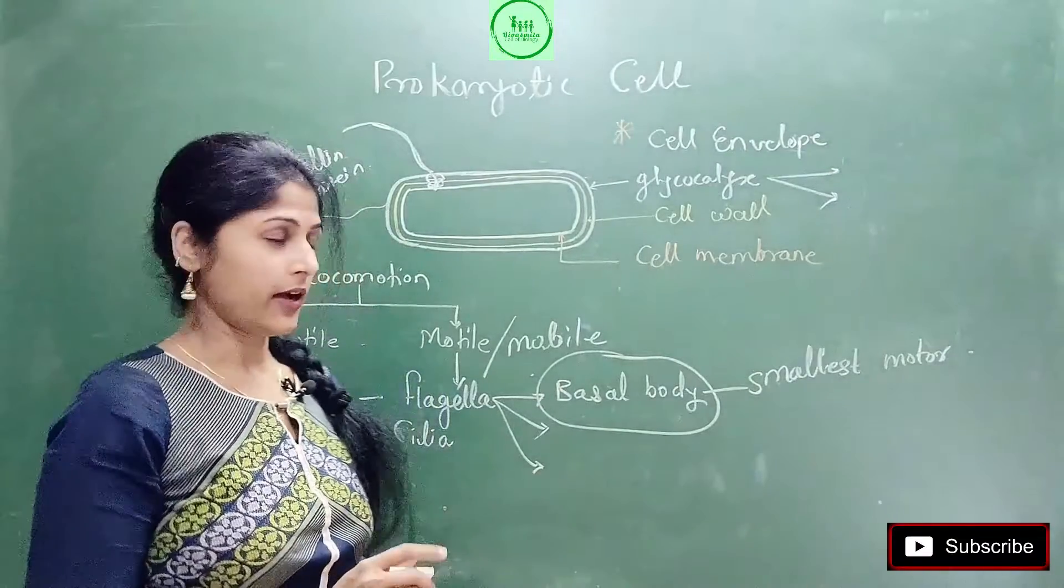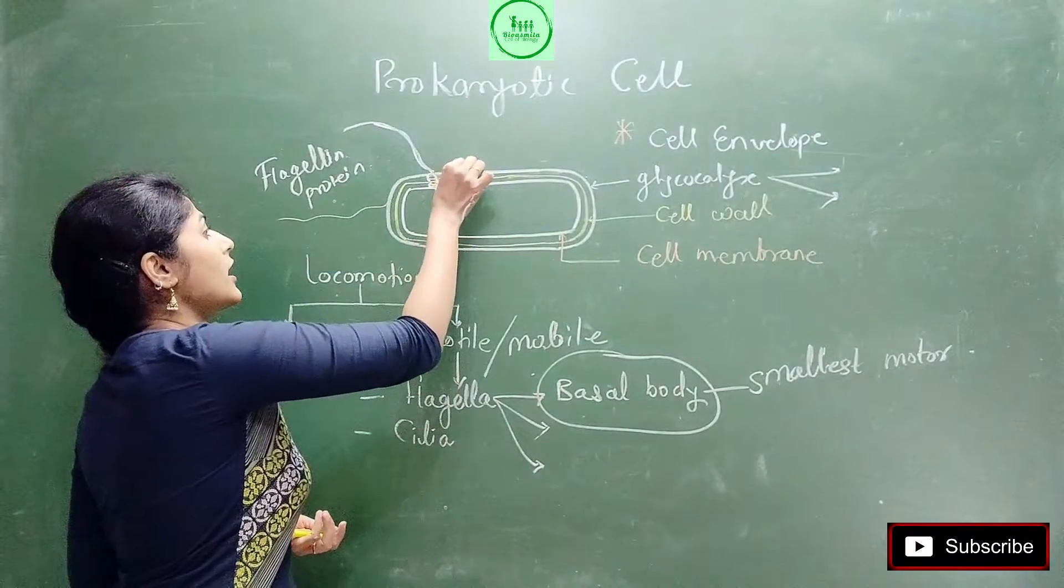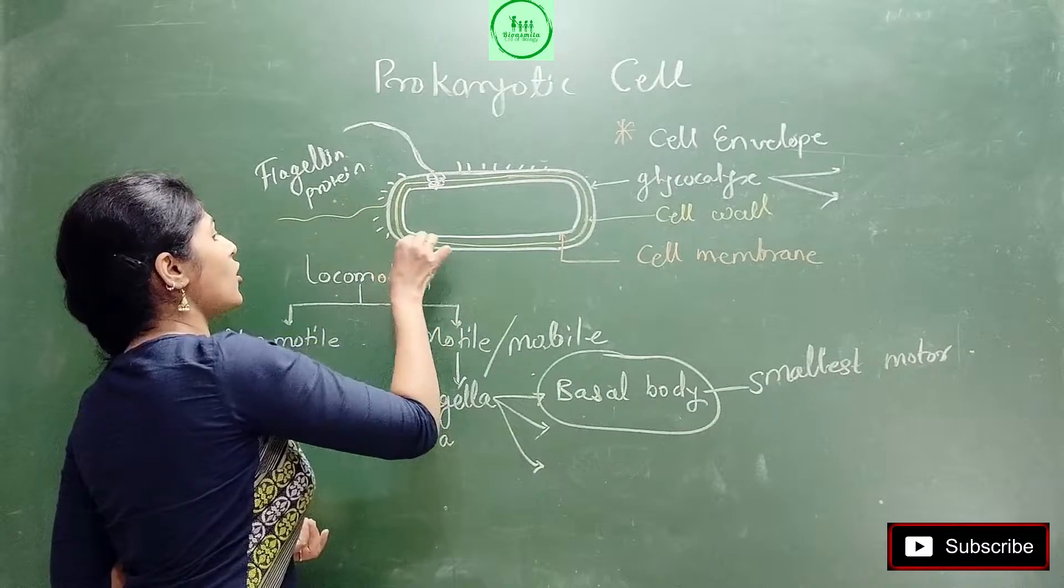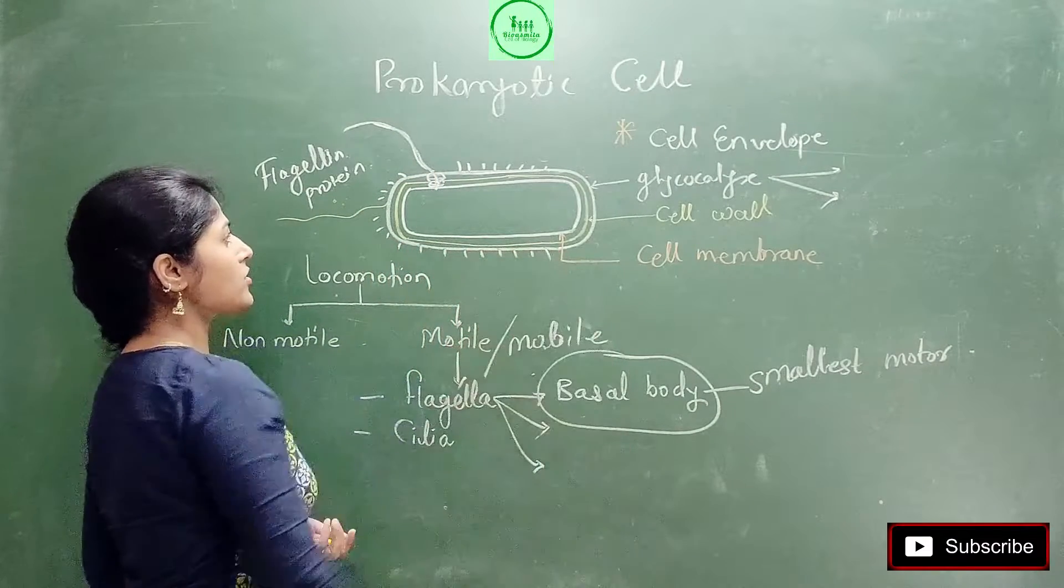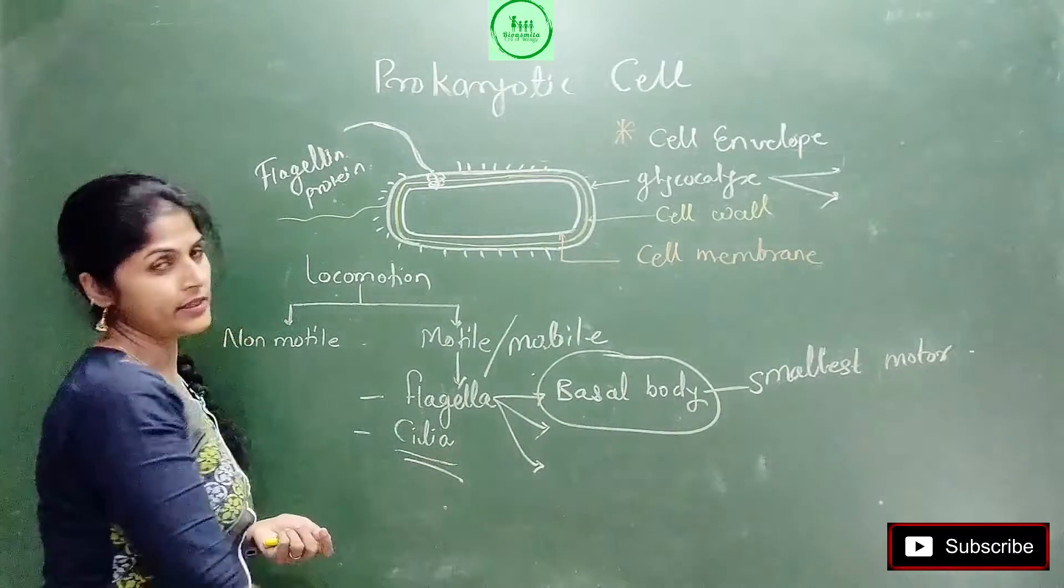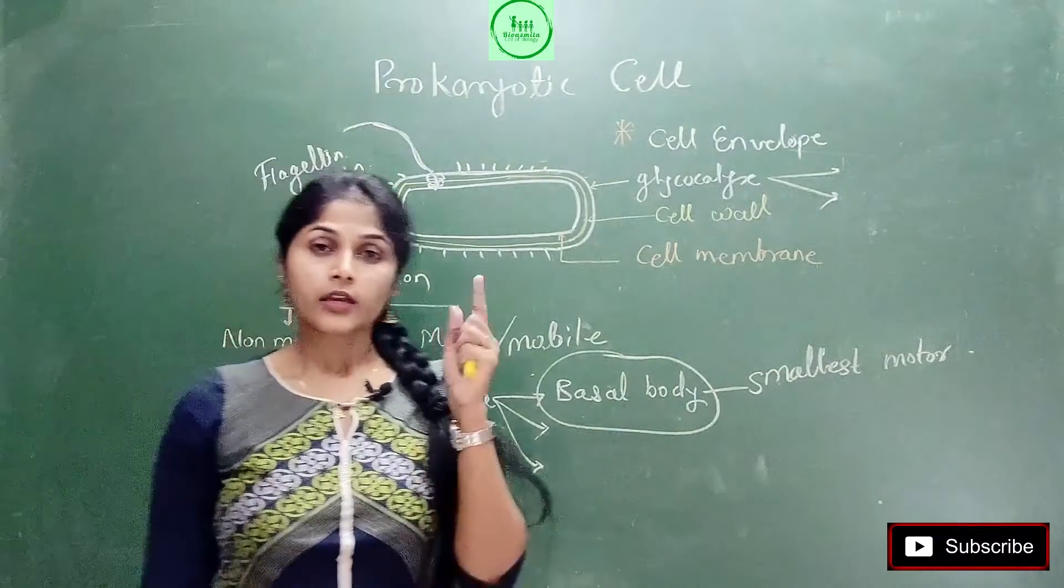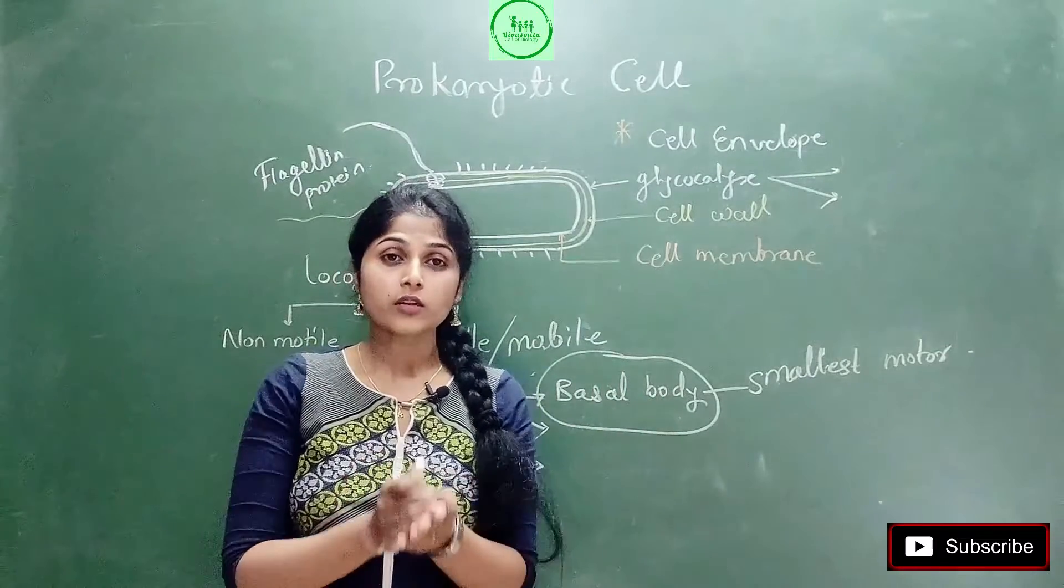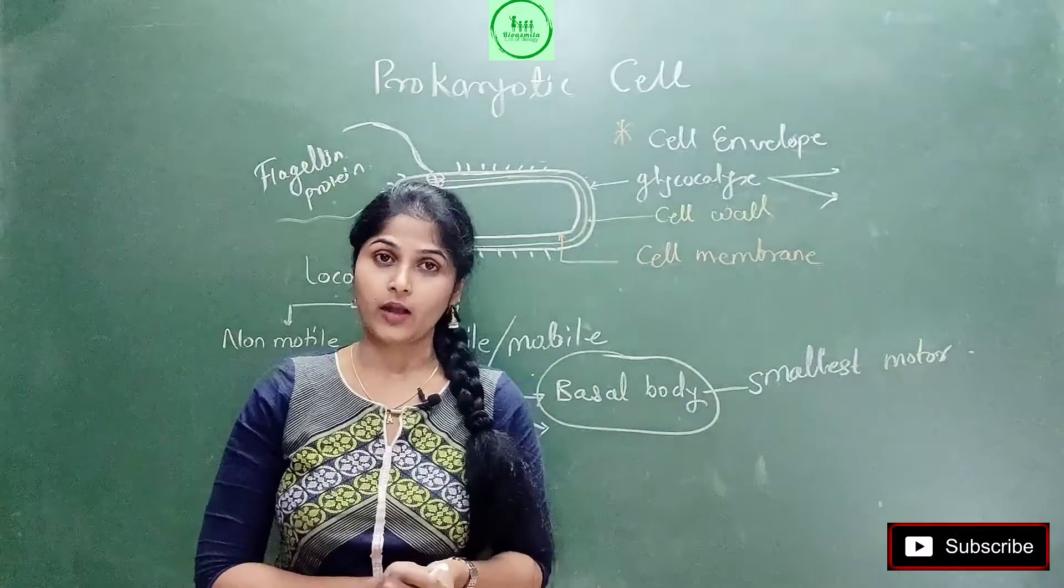Along with flagella, there is the presence of another thread-like structure on the surface of bacteria, and this structure is called cilia. Thread-like structure flagella, thread-like structure cilia - then what is the difference between cilia and flagella?